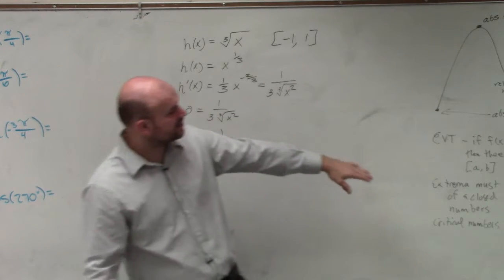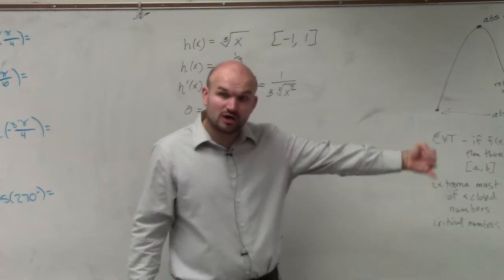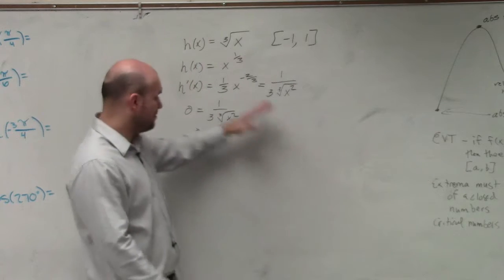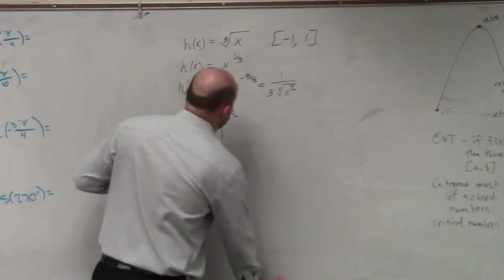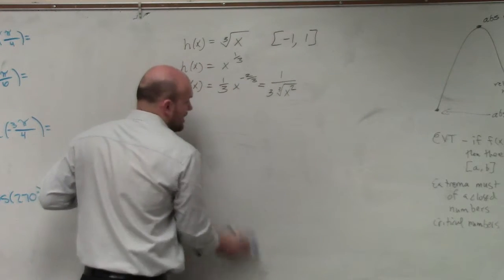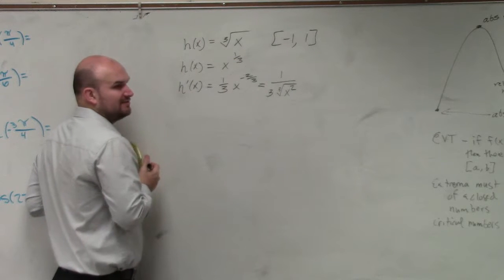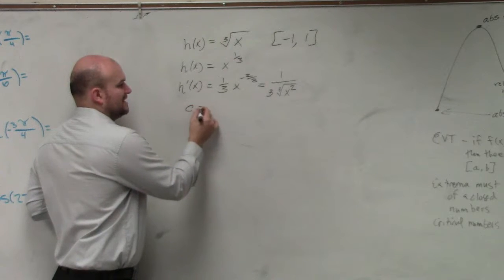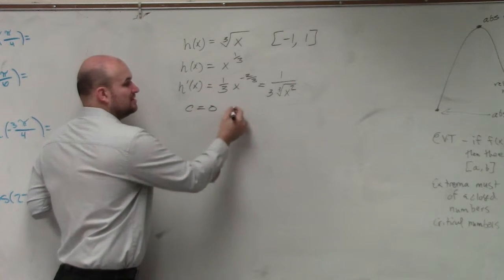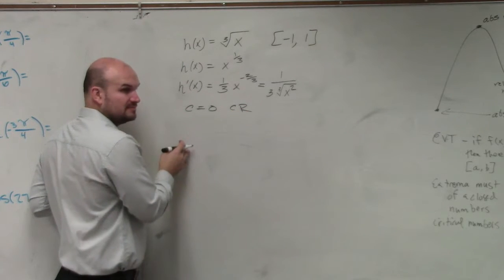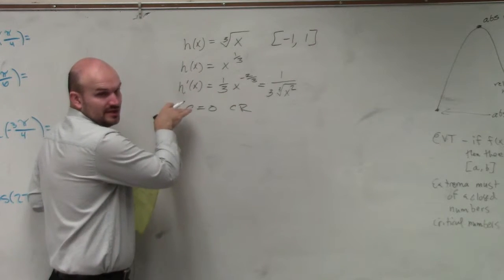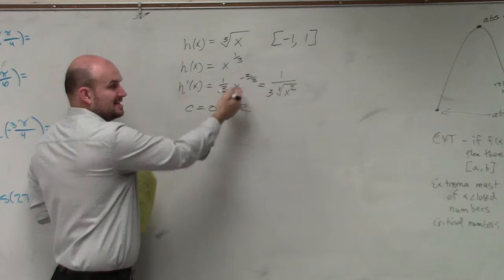But remember, critical numbers occur when f prime of c is equal to 0, or when it's undefined. So when we go back and look at this equation, do we have a value where our h prime is going to be undefined? c has to equal 0. So that is a critical number for us, because it's undefined. It's not when it's set equal to 0. It's when it's undefined in this example.